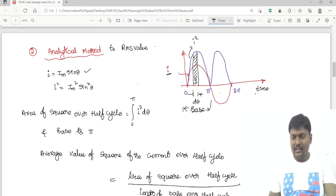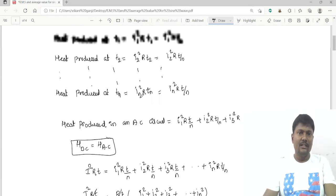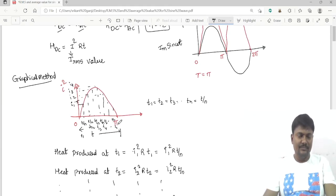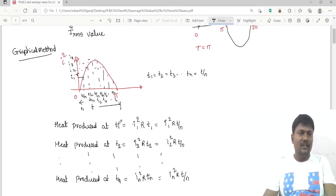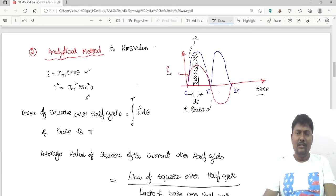On the y-axis I am taking the current, and on the x-axis I am taking time in degrees. In the previous case I took in terms of total time period T, and that will be divided in terms of four seconds only, T by n equal intervals.